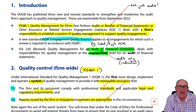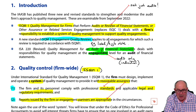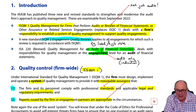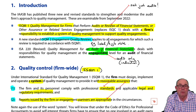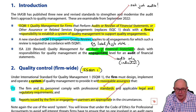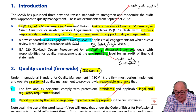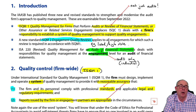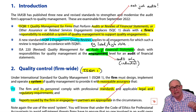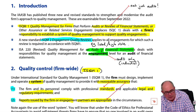ISQM 1 sets out the basic concepts that the firm needs to comply with. ISQM 2 is more concerned with one specific aspect — engagement quality reviews. Some of you may be familiar with the term 'hot review.' ISQM 2 is concerned with hot reviews. The final standard is ISA 220, dealing with each individual audit engagement on an engagement-by-engagement basis.